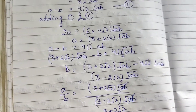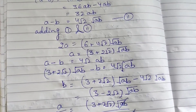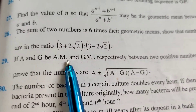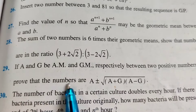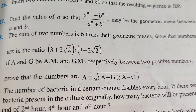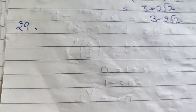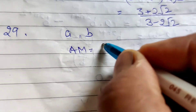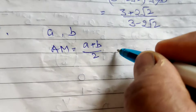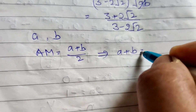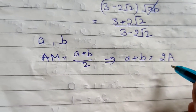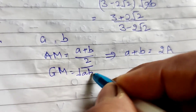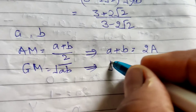Question number 29: If A and G be the arithmetic mean and geometric mean respectively between two positive integers, prove that the numbers are A plus or minus under root (A+G)(A-G). The AM of two numbers a and b is (a+b)/2 equal to A, meaning a + b = 2A. The geometric mean gives root(ab) = G, meaning ab = G².